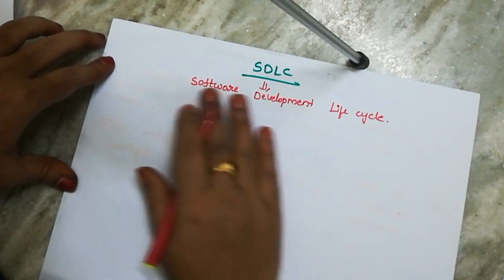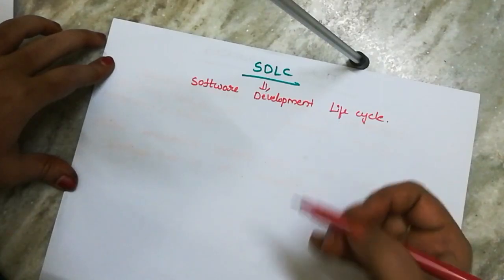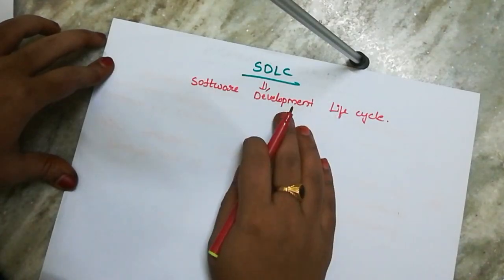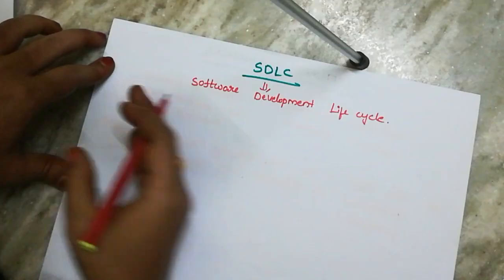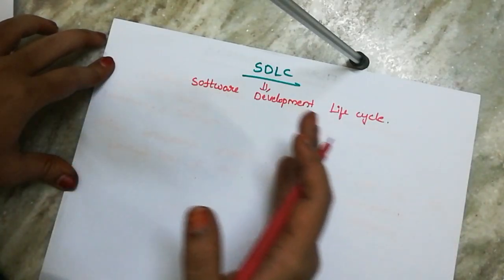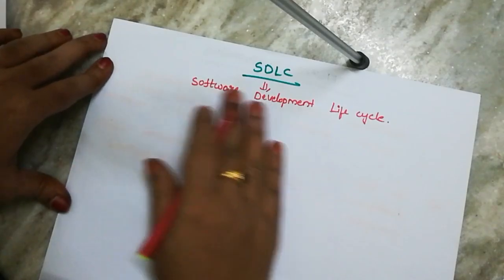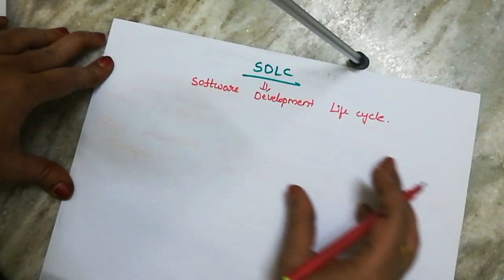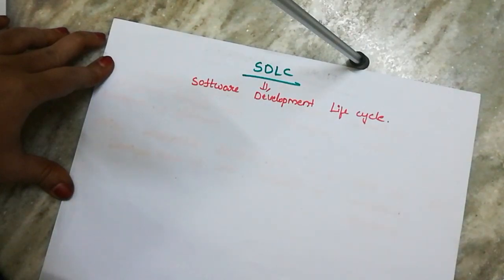Software Development means we can develop. Life Cycle means we have a life cycle. Like a human life cycle, there is a starting stage, a middle stage, and an ending stage. So one by one, through these stages, we can develop — that is Software Development Life Cycle.